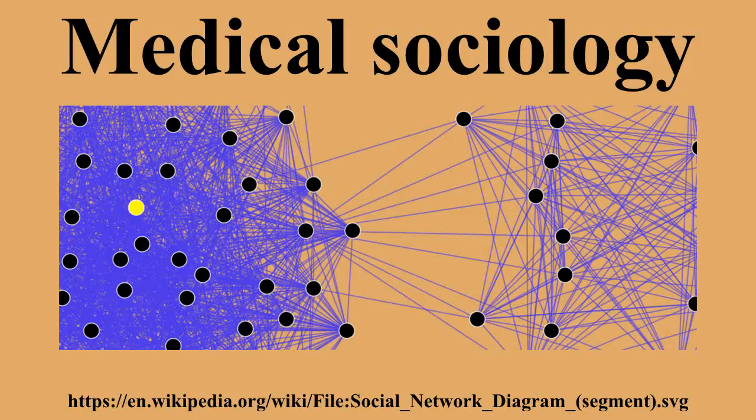The American Public Health Association hosted a similar section of sociology between 1909 and 1921. It took another quarter of a century before the next medical sociology journal would appear.